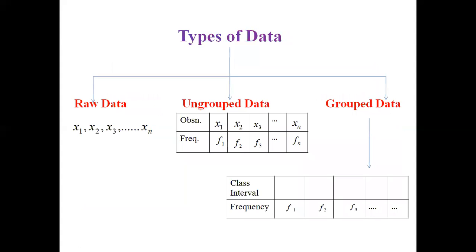Here is a quick review of the types of data. The first one is raw data — in raw data, we are given the observations. The second type is ungrouped data — in ungrouped data, we are given the observation and its corresponding frequency. The third type is grouped data — in grouped data, we are given the class interval and its frequency, where the class intervals are either continuous or discrete.